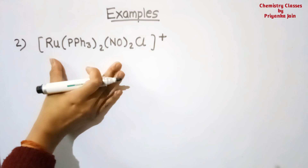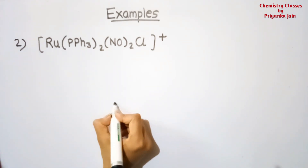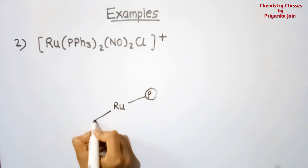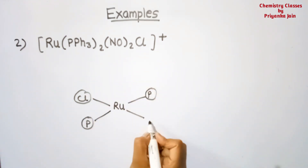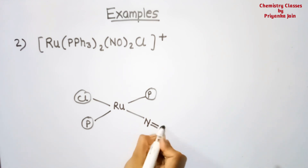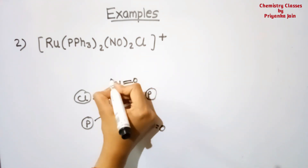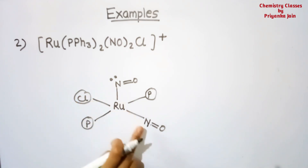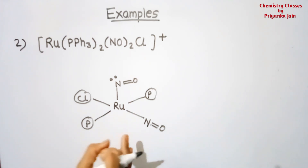Now see another complex: [Ru(BPS3)₂(NO)₂Cl]⁺. This is also a cationic, square pyramidal 16-electron species. Ruthenium is the central atom with two phosphine ligands, one chlorine, and two nitrosyl ligands. One of the nitrosyl ligands is acting in the linear binding mode as a 3-electron donor, while the other is in the bent form with the lone pair in the non-bonding orbital of nitrogen, acting as a 1-electron donor.